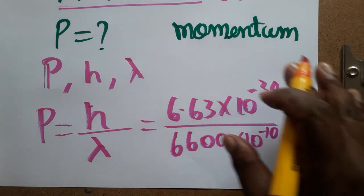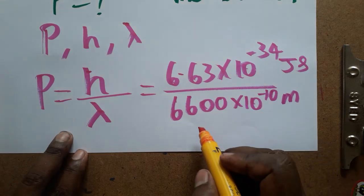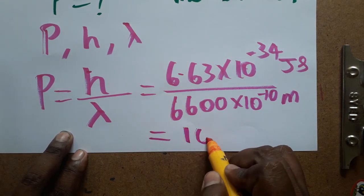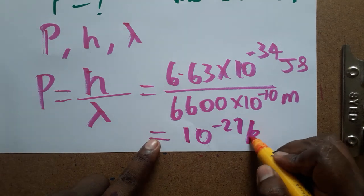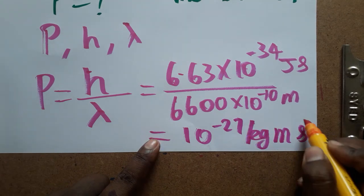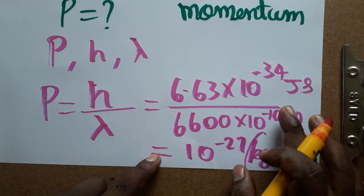So if you are calculating this, everything we will get: what is the momentum? Momentum finally we are going to get is 10 power minus 27. We know momentum is mass times velocity, so kg meter second minus 1 unit, otherwise you can give as joule second meter inverse, both is the same.